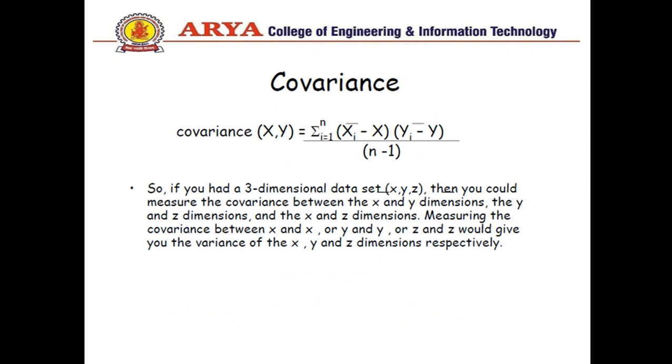Now covariance can be calculated by using the formula. Here we consider summation of i equal to 1 to n, that is the total number of values, x_i minus x_mean times y_i minus y_mean upon n minus 1, that is the standard deviation.